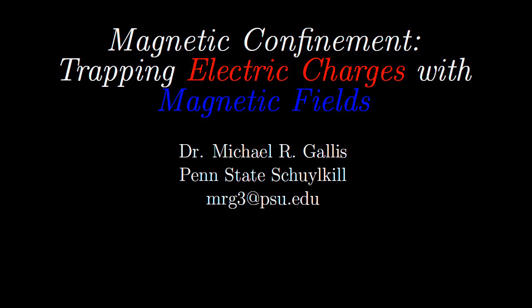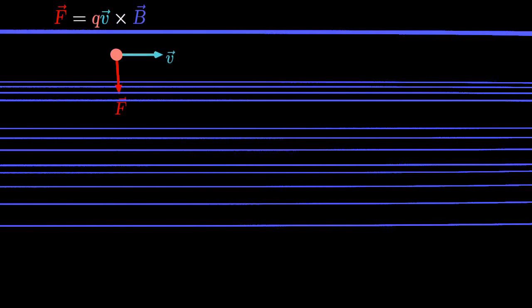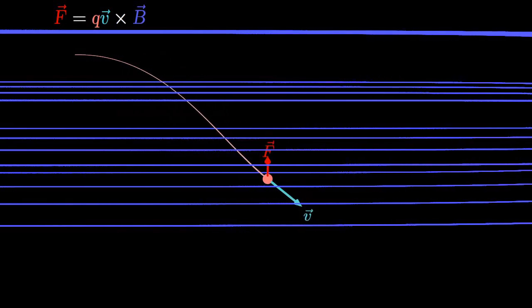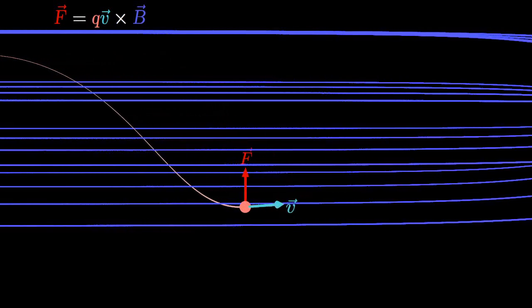Magnetic fields can be used to confine electric charges in motion to certain regions of space through two primary mechanisms. First, charged particles tend to spiral around magnetic field lines, and the net travel of the charge tends to be along those field lines.